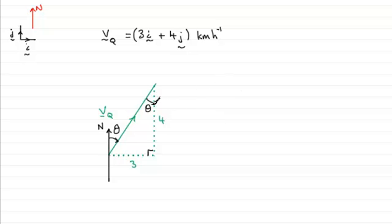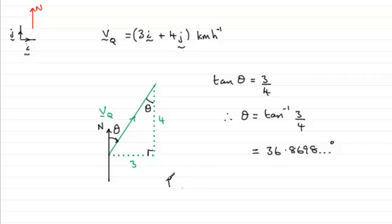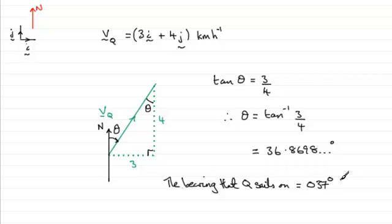All we need is basic trigonometry. We can say that tan of theta equals the opposite over the adjacent side, so tan theta equals three over four. To get theta, it's the inverse tan of three quarters, which gives 36.8698 degrees. When we give a bearing, we often give it as a three-figure bearing, so to the nearest degree that's 037 degrees — that is the bearing that Q sails on.